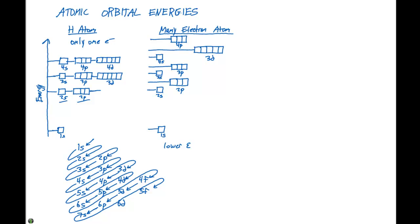After the 7s comes the 5f, then the 4d, and so on. So this little diagram right here can kind of help you if you're struggling with figuring out how to draw this many electron atom diagram up here.